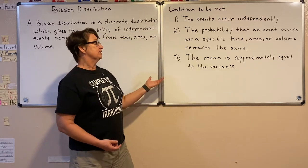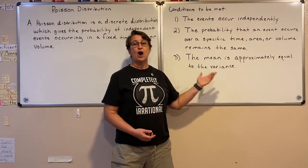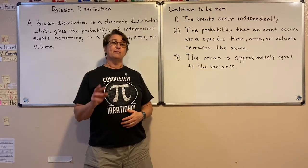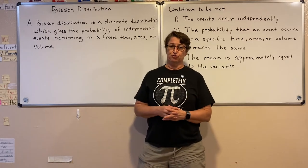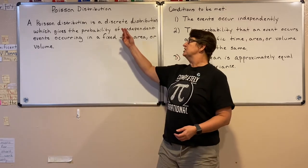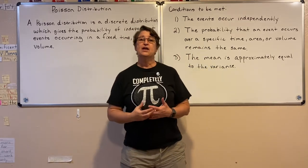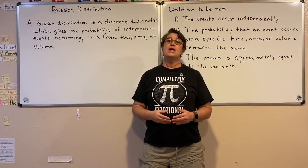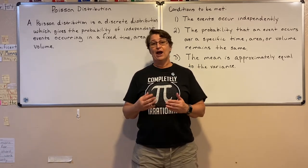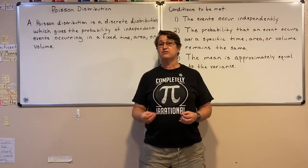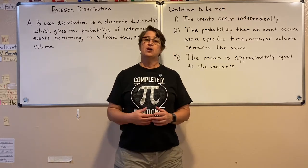One of the characteristics of Poisson is that the mean is approximately equal to the variance — the mean and the variance are about the same. It is a discrete distribution, so the Poisson variable takes on discrete values. In other words, our x values are going to be 0, 1, 2, 3, and those nice discrete numbers.